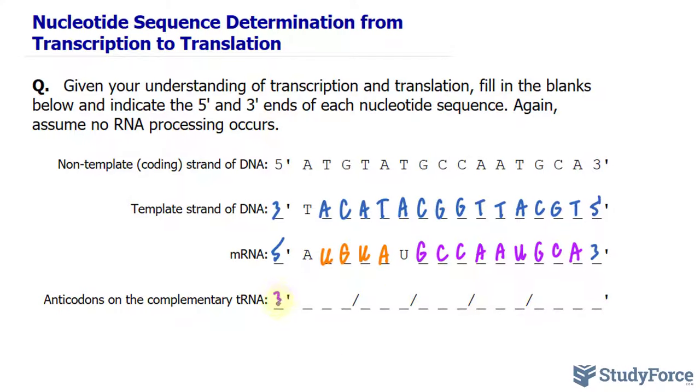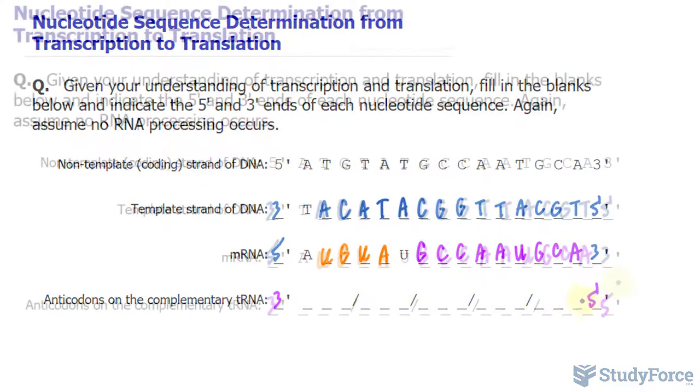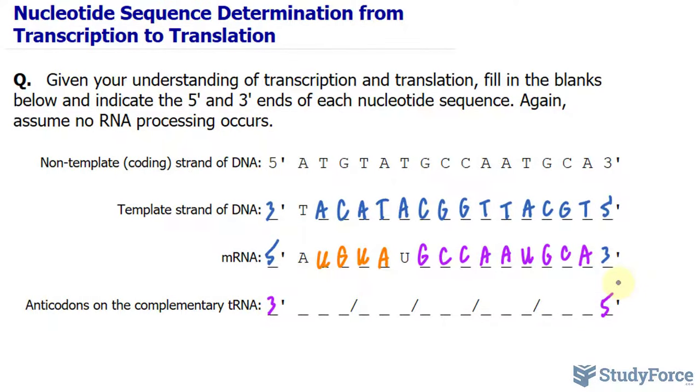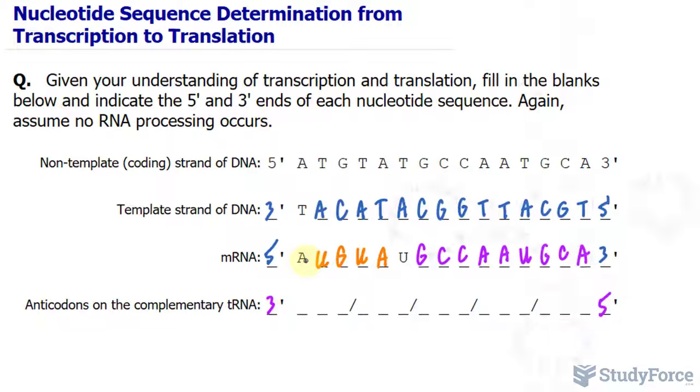Each tRNA molecule has an anticodon region that is complementary to the codon so that they hydrogen bond. Again, this should be 3 prime and that should be 5 prime. Notice the same theme: where you see 5 prime, you should have 3 prime, and where you see 3 prime, you should have 5 prime.